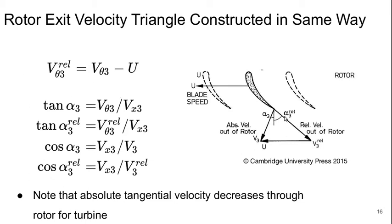So here, alpha 3 rel is negative, whereas alpha 3 is positive. And note that the absolute tangential velocity is decreasing through the rotor for a turbine. That must be the case, or else it isn't a turbine.